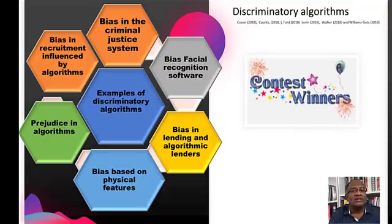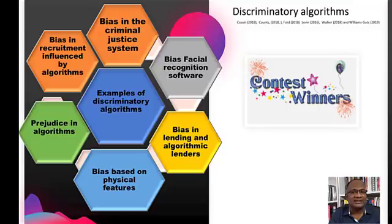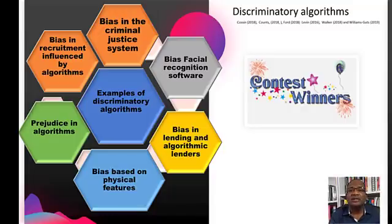Algorithms can also lead to discrimination based on physical features. In 2016, an algorithm was used to judge a beauty contest with over 6,000 contestants from 100 countries. According to the report, there were 44 winners, which included few Asians and only one had dark skin.